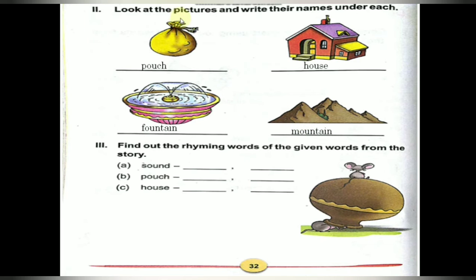Once again I will show the pictures — you say the name children. Pouch — P-O-U-C-H. House — H-O-U-S-E. Fountain — F-O-U-N-T-A-I-N. Mountain — M-O-U-N-T-A-I-N. Pouch, house, fountain, mountain. Look at the picture and write their names under each.